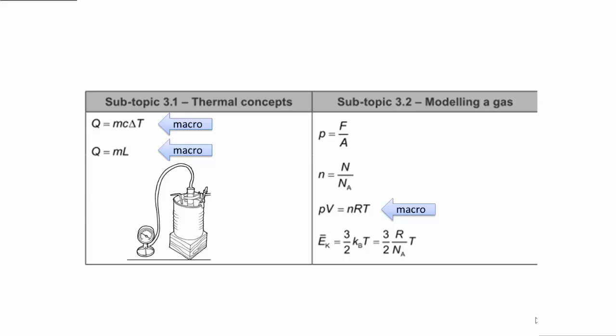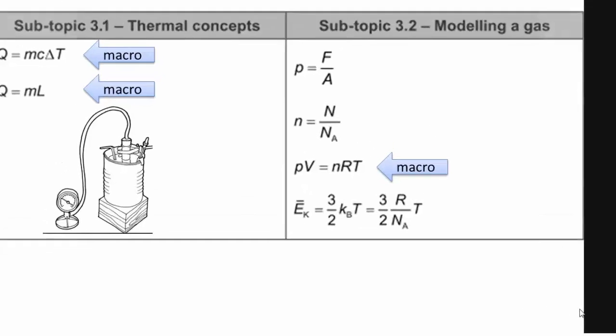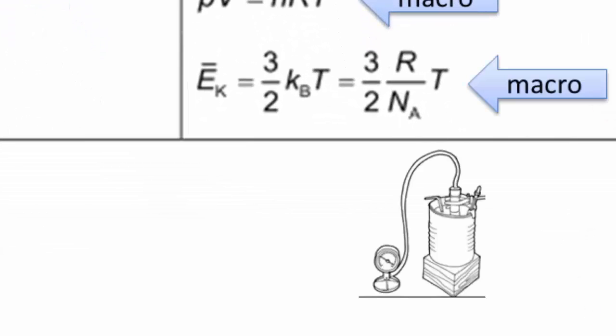The Maxwell-Boltzmann equation is looking at temperature, but it also has microscopic properties. The kinetic energy there is the average kinetic energy of the particles of the gas, and we can't measure those directly.